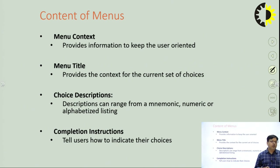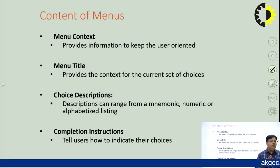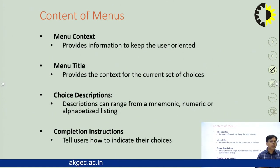What content should be in the menus? Menu content must provide information to keep the user oriented. All relevant information should use meaningful words that indicate how menus are connected with each other, and there should be a logical flow in the menu. Menu titles should be meaningful so the user understands the purpose. Choice descriptions may include mnemonics, numeric, or alphabetic listings.